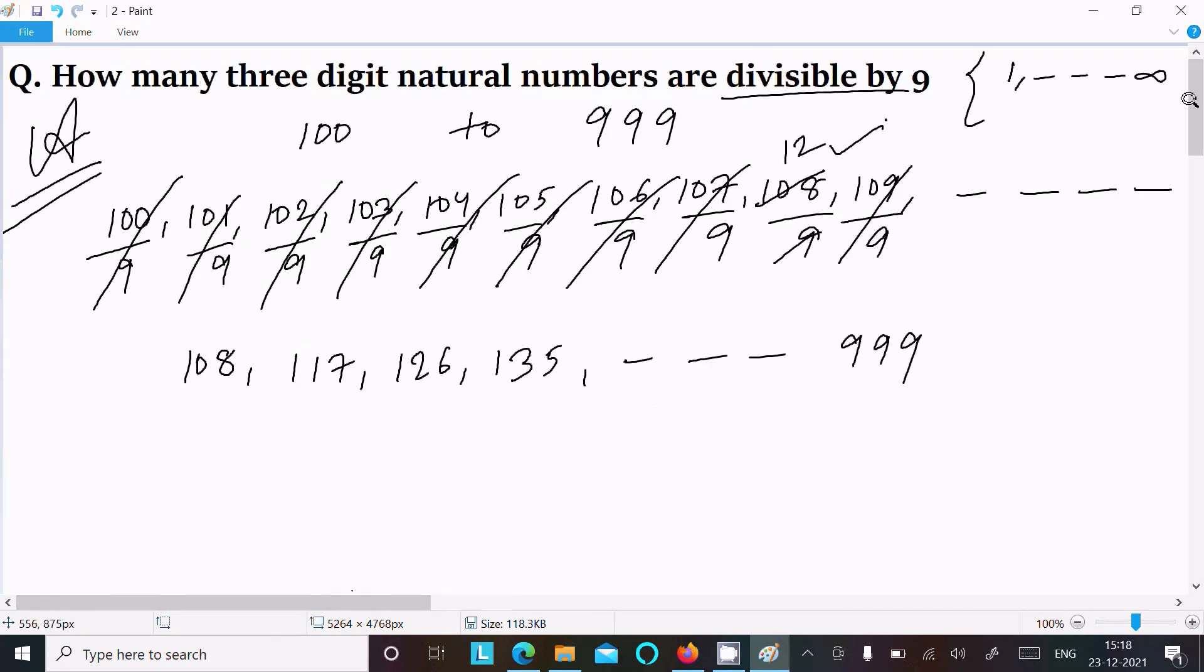After that, these are the 3-digit numbers divisible by 9. The first term is 108. The common difference we can easily find: 117 minus 108. If you subtract, the d value comes to 9.